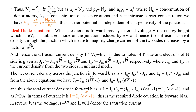These majority charge carriers get energy from the external battery, and their velocity increases by a factor of e^(eV/kT). Hence the diffusion current density due to holes of the p side is Jhp* = Jhp · e^(eV/kT), where Jhp is the diffusion current in the absence of external voltage due to holes of the p side. Similarly, Jhn is the current due to holes present on the n side.